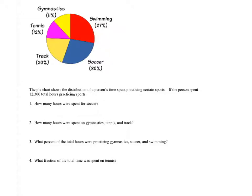All right, the pie chart shows the distribution of a person's time spent practicing certain sports. If the person spent 12,300 total hours practicing sports - it's just an example, you guys, I don't know how reasonable that is - how many hours were spent for soccer?